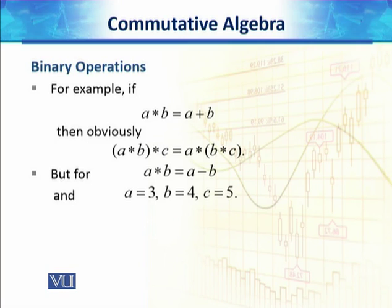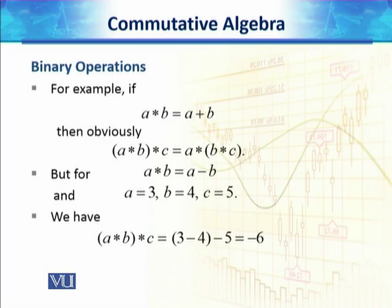But on the other hand, if we have a star b is equal to a minus b, and a is equal to 3, b is equal to 4, and c is equal to 5, then (a star b) star c is given by (3 minus 4) minus 5, which is equal to minus 6. On the other hand, if we compute (b star c) first, that will be minus 1, and then we have the operation with a, which is 3 minus minus 1, so that is equal to 4.